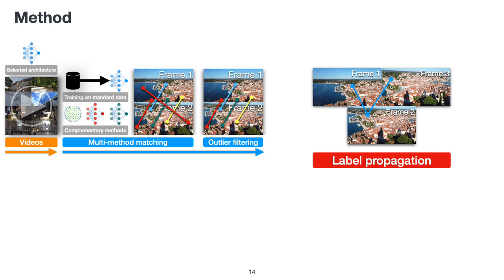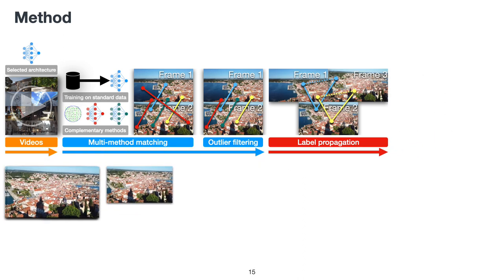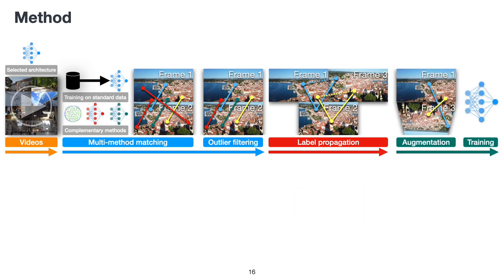These matches are then filtered by standard robust fitting methods. Image-matching models often benefit from training on images with small overlaps. However, directly applying existing methods on such challenging data cannot create reliable labels. Hence, we leverage the dense and reliable labels generated between nearby video frames and propagate them to distant frames based on temporal coherence. Specifically, we can obtain a reliable match between frame 1 and frame 3 if a pixel in frame 2 is matched to both of them. Finally, strong data augmentation is added to the video data, and we train the final model from scratch using a mixture of video data and standard image-matching datasets.